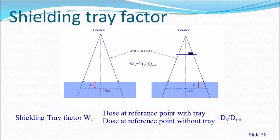Similarly, when a shielding tray is placed in the beam to hold shields, the acrylic tray itself attenuates the radiation by a few percent. The tray factor = dose at reference point with tray / dose at reference point without tray. This correction must be applied to the output whenever a shielding tray is used in the linear accelerator or telecobalt unit.